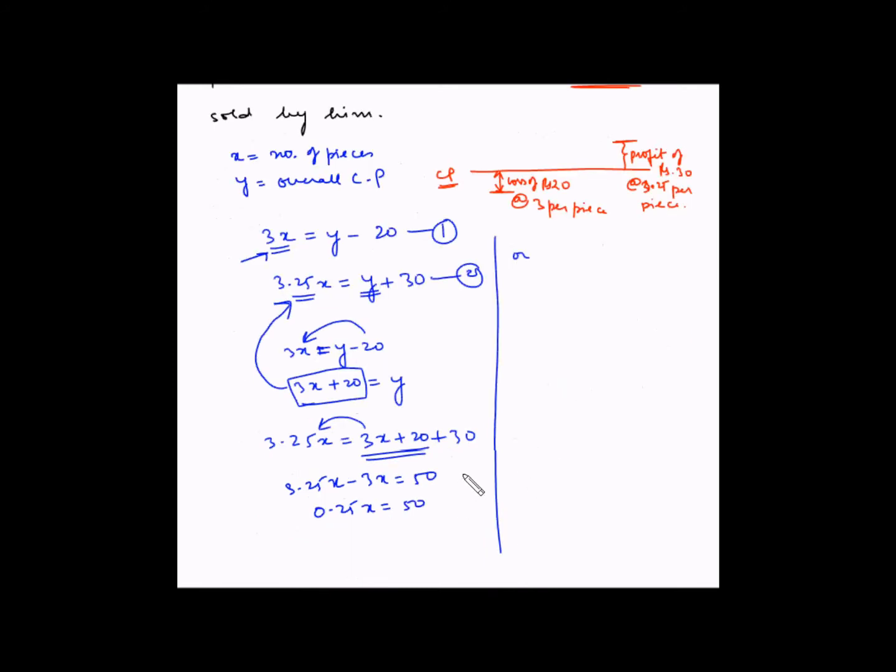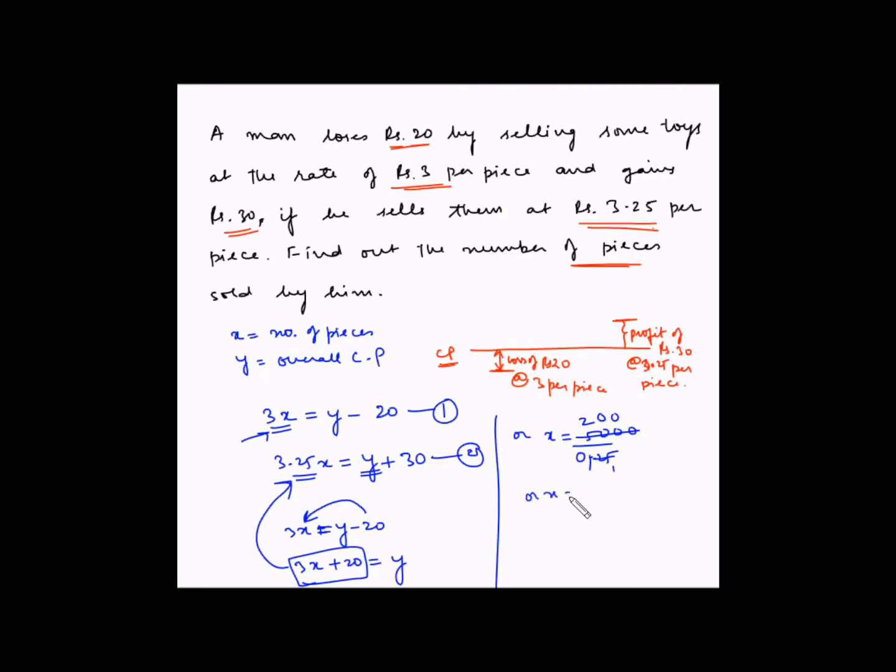So let's remove the decimal and put two zeros here. 25 ones are 25, so X is equal to 200. So this is the quantity or the number of pieces that the man is trading in.